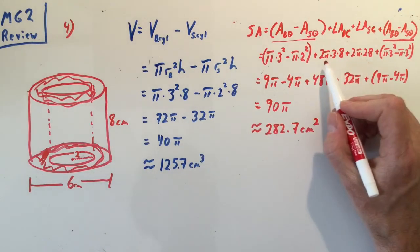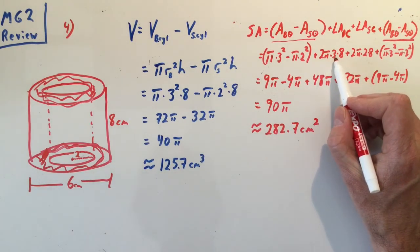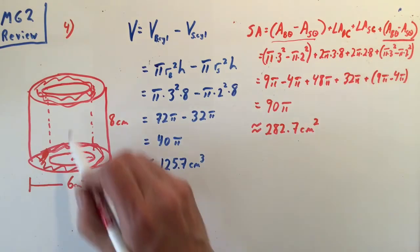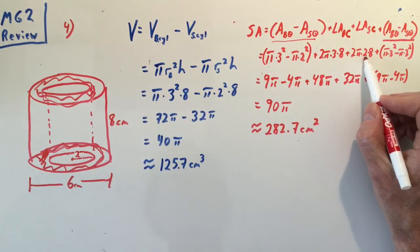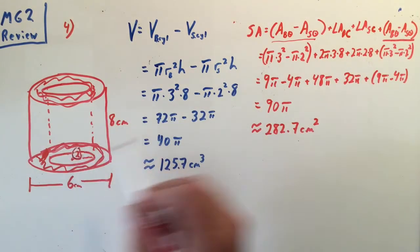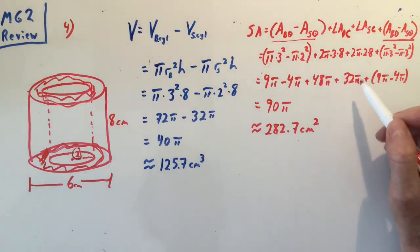For the inside lateral area: 2π(2), which is this radius right here, times 8. And then again I have area of the big circle minus area of the small circle.